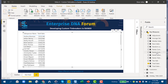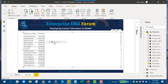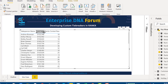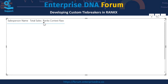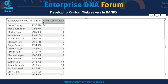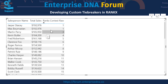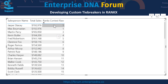We drop that measure into our matrix, sort based on rank, and what do you know — we end up exactly tied at the top. It hasn't been a great month for sales, so we can't afford to give away two Cadillac El Dorados. We're going to have to break this tie.